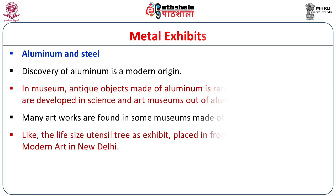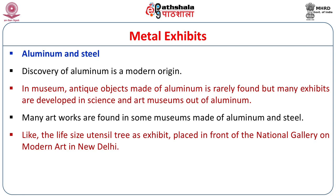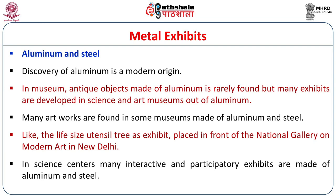Aluminium and steel are very new materials and do not fall under antique objects, but many museums now have exhibits made of aluminium and steel. Antique objects made of aluminium are rarely found. In the National Gallery of Modern Art in New Delhi, you can see a plant made of steel placed outdoors. In science centres, many interactive and participatory exhibits are made of aluminium and steel.